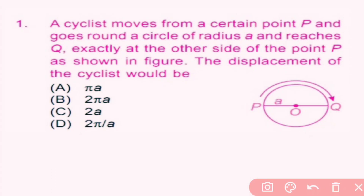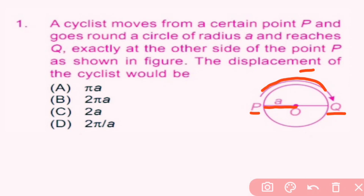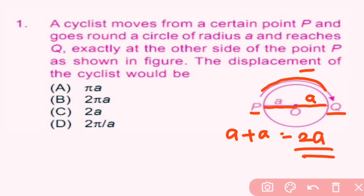A cyclist moves from a certain point P and goes around a circle of radius 'a' and reaches Q exactly at the other side of point P, as shown in the figure. The displacement of the cyclist would be dash. Here the cyclist moves from P to Q in a circular path, and we have to find the displacement. Displacement is the shortest distance between P and Q. OP is the radius of the circle and OQ is also the radius, so both are 'a'.